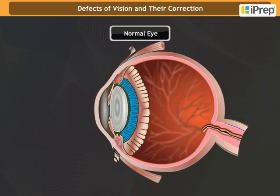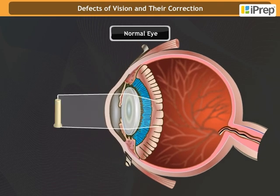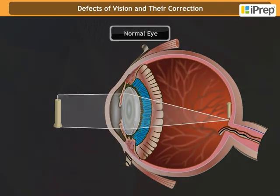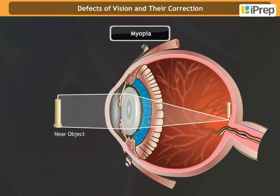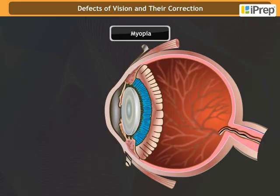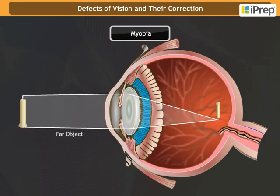Defects of vision and their correction. Myopia is also known as near-sightedness. A person with myopia can see nearby objects clearly but cannot see distant objects distinctly. In a myopic eye, the image of a distant object is formed in front of the retina and not at the retina itself.